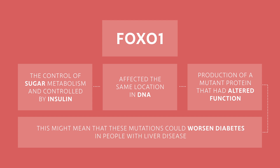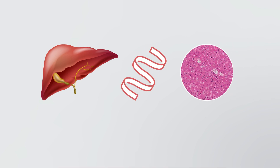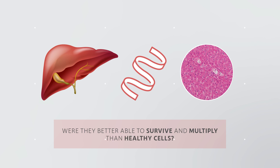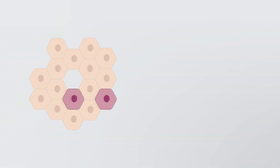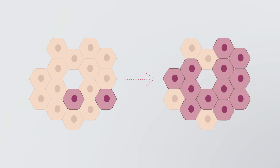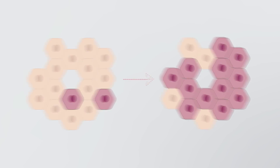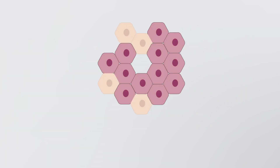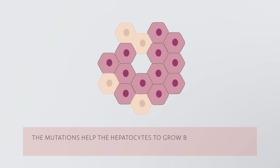Dr. Hoar, Dr. Campbell, and their team were interested to discover if these mutations gave the hepatocytes carrying them a selective advantage — were they better able to survive and multiply than healthy cells? They found that groups of hepatocytes with mutations in FOXO1, CIDEB, and ACVR2A were larger than their healthy neighbors, suggesting that these mutations give a selective advantage, helping the hepatocytes to grow better than nearby cells without these mutations.